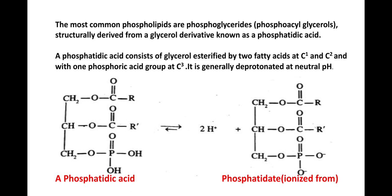Now we are going to discuss about phosphatidic acid and the formation of the phosphatidic ion, phosphatidate. A phosphatidic acid consists of a glycerol esterified by two fatty acids at C1 and C2, and with one phosphoric acid group at C3 — phosphatidate — and it is generally deprotonated at neutral pH. Here, the phosphatidic acid and phosphatidate — this is an ionized form.